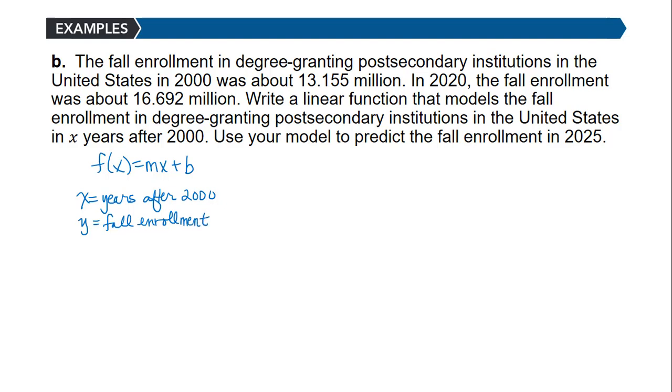In this case, we actually know two data points. We know that in the year 2000, the enrollment was 13.155 million. We can convert this to an ordered pair. But be careful because x is years after 2000, so the year 2000 represents x = 0. So one ordered pair is (0, 13.155).